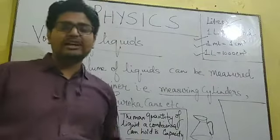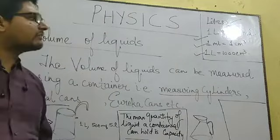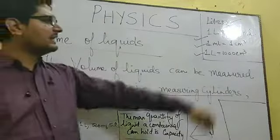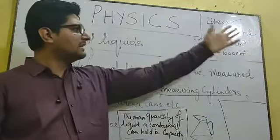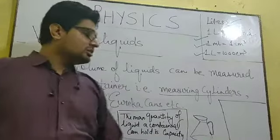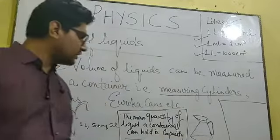The SI unit for measuring the volume of liquid is litres, and the smaller unit is millilitres. These are the things you have to remember, and we will learn how to measure accurately the volume of any liquid.